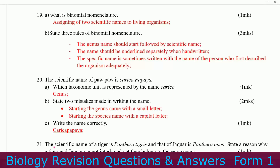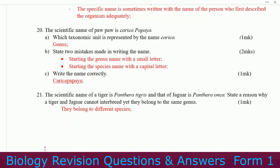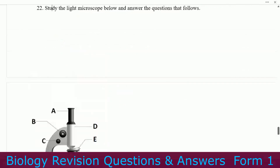Number twenty: the scientific name of pawpaw is Carica papaya. Which taxonomic unit is represented by the name Carica? That one is the genus. State two mistakes made in writing the name. Number one — starting the genus name with a small letter. Number two — starting the species name with a capital letter. Read the name correctly: Carica papaya — that is how you are supposed to write it.